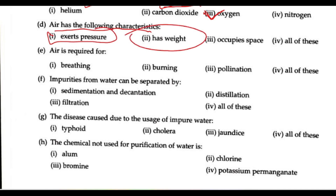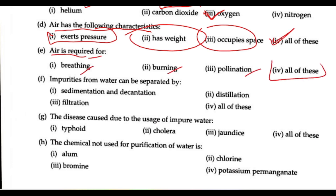Next question: air has the following characteristics — air exerts pressure, air has weight, and air occupies space. So all of these are correct. Air is also required for breathing, burning, and pollination. So the answer is all of these.